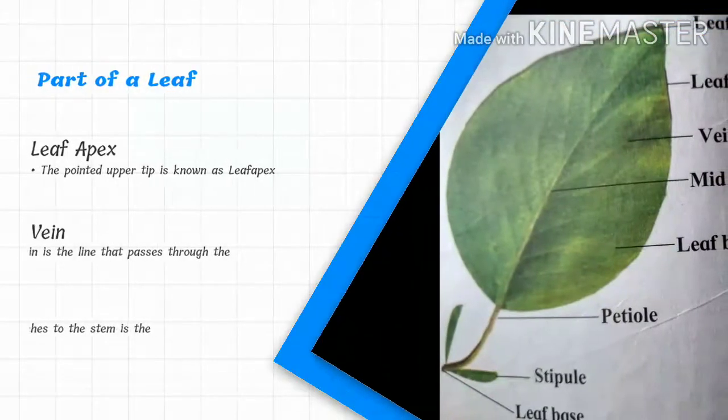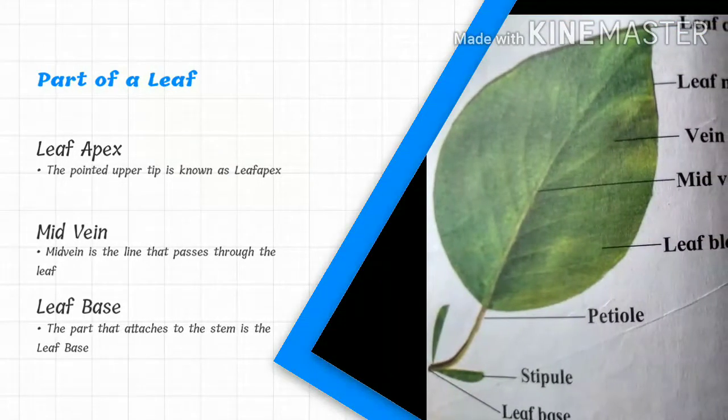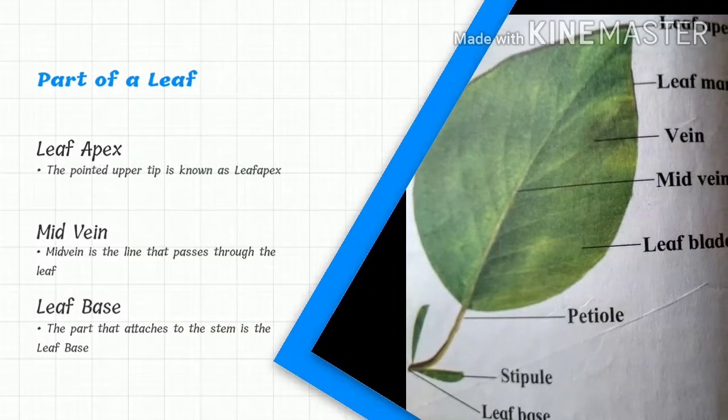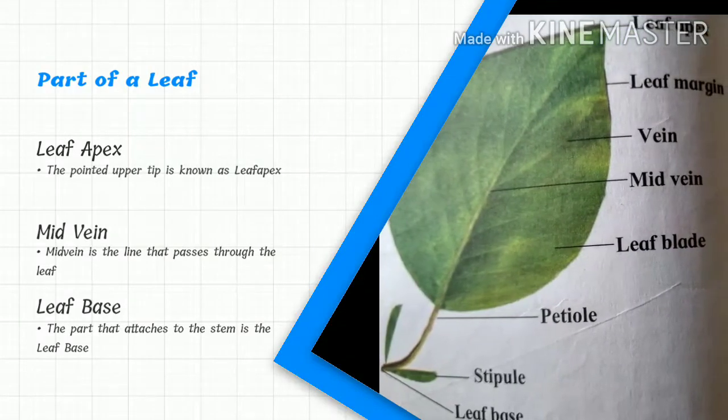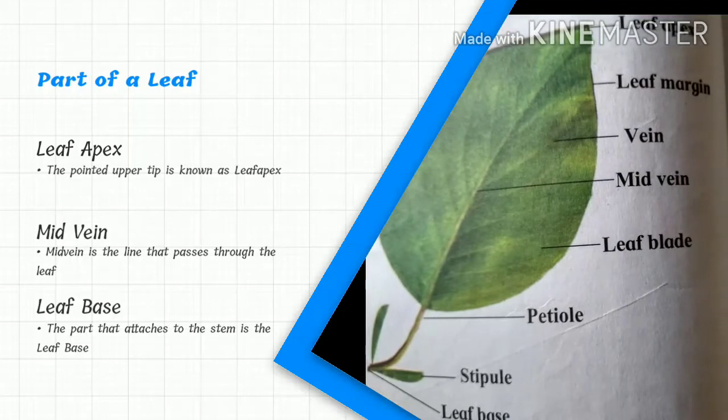Parts of the leaves: Leaf apex - the pointed upper tip is known as leaf apex. Midvein - the line that passes through the leaf. Leaf base - the part that attaches to the stem is the leaf base.